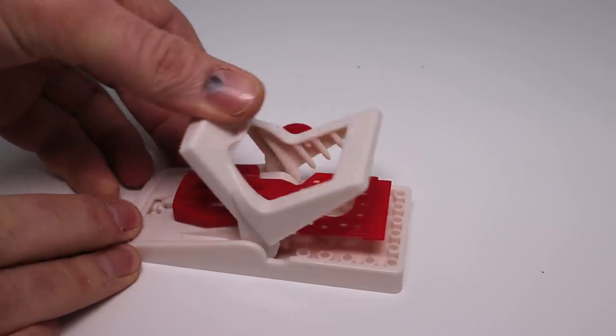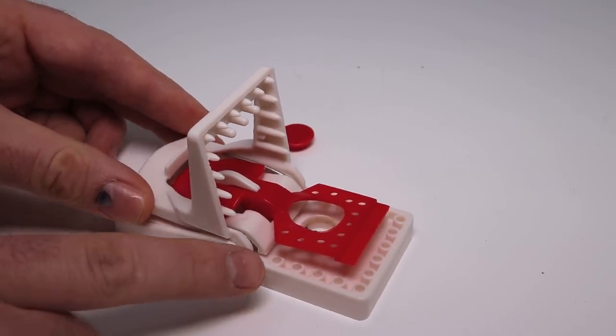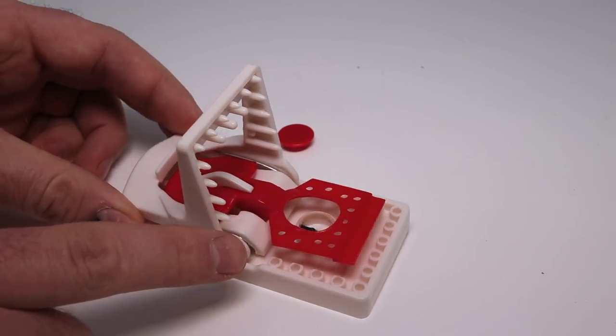To set it, you pull this back, it clicks into place. This top kill bar has quite a few teeth. Those are pretty big. They match up with holes on the bottom, almost like Legos.